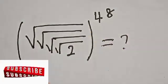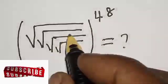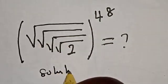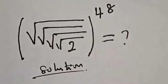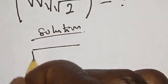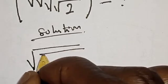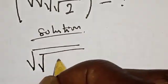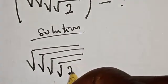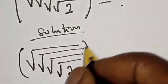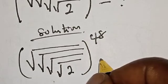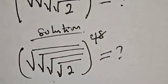So let's see how we are going to tackle this. We have the given question: root, then another root, by another root, and another root of 2, everything raised to power 48. Now, what do we do next?